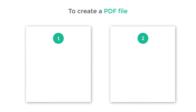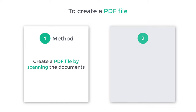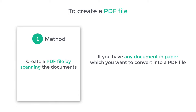So to create a PDF file, there are 2 methods. The first method is to create a PDF file by scanning the documents. If you have any document on paper which you want to convert into a PDF file, you can follow this method.